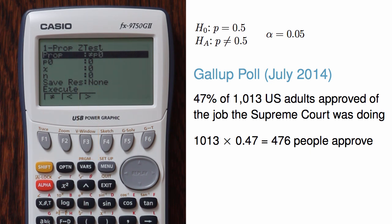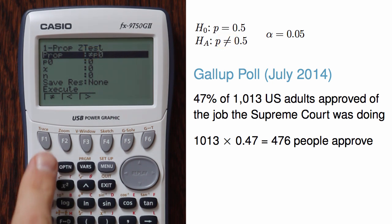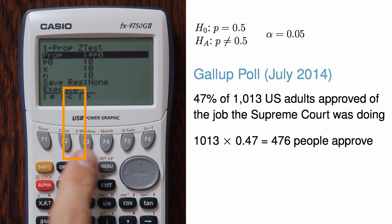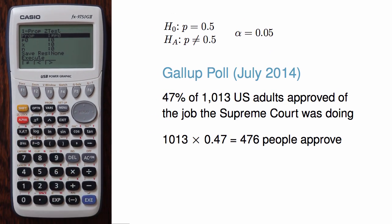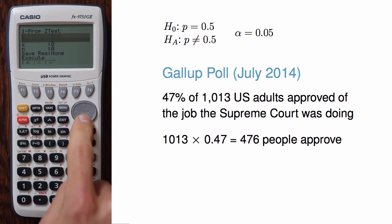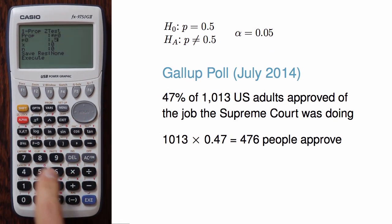Now we must specify the details of our hypothesis test. Looking at our hypotheses, note that the null value is 0.5 and it's two-sided, so we make sure that we have a not-equals sign here. If we had needed to change to a different sided test, we could have used the keys F1, F2, or F3. Here we'll need to change P0 to 0.5 and hit execute.